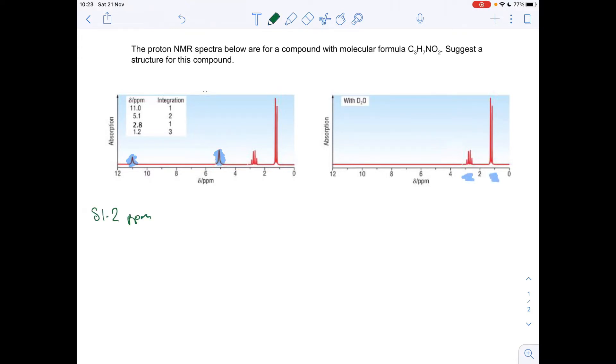So the first peak we'll look at is the one at delta 1.2. So this one here. We're just going to write down what we can say from that peak. So the first thing I would say is that it's a doublet. So we'll get that keyword in straight away. What does a doublet mean? It means there's an adjacent CH. It's got an area of 3. Therefore, the signal is being caused by a CH3. And the final thing we're going to say is the environment that it's in, it's from its shift value of 1.2. So we'll get off the data sheet. That's HCR.